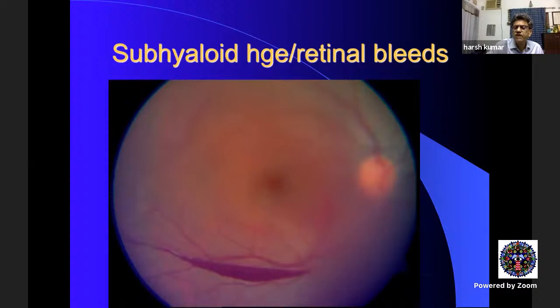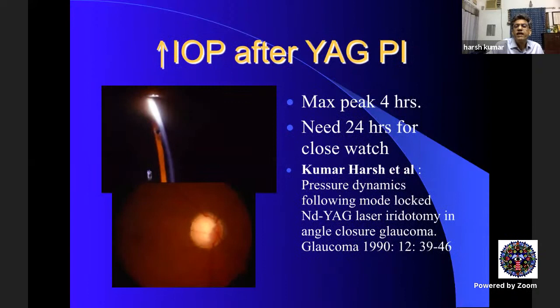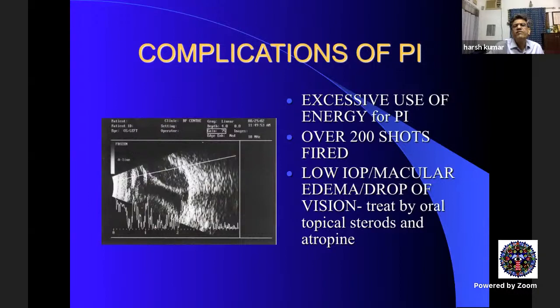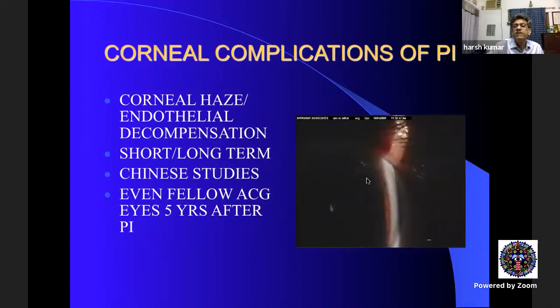Sub-conjunctival hemorrhage and retinal bleeds can also occur with high energy. Pressure spikes peak around four hours post-laser — if the disc is compromised, watch closely and give Diamox or Mannitol if needed. Do not make it an ego issue to complete iridotomy in one session. One case had 200 shots given — something completable in four shots — resulting in choroidal edema, macular edema, and decreased vision. Use multiple sittings. Corneal damage is also common — choose a mid-peripheral site and use posterior focal shift or zero shift to focus deep in the iris.